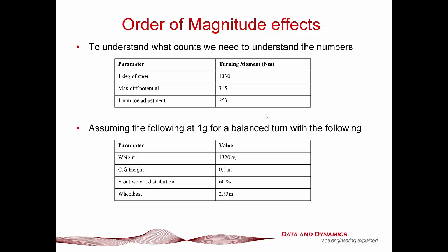In terms of order of magnitude of effects: a degree of steer at a slip angle of about three degrees and at 700 kgf gives a turning moment of about 1,330 Newton metres. The max diff potential, driving all load through the outside front tyre alone, gives a turning moment of about 315 Newton metres. And a 1mm toe adjustment over a rolling tyre radius of about 300mm gives an adjustment of about 250 Newton metres — which actually took me by surprise. These numbers were based on a 1,320kg car with a CG height of 0.5m, 60% front weight distribution, and a 2.5m wheelbase.